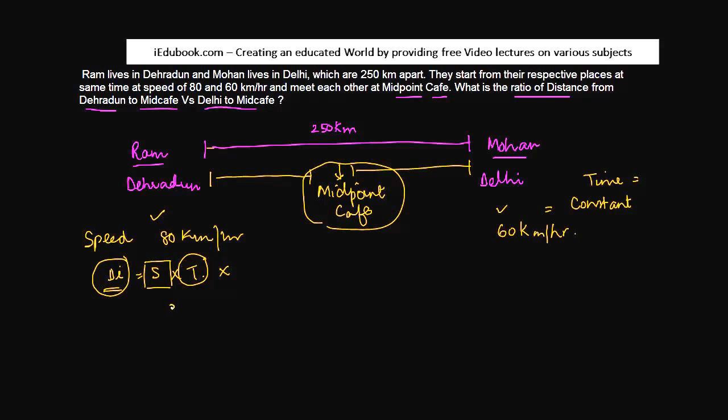What's the ratio of their speed? The ratio of their speed is 80 is to 60, or 4 is to 3. And this is the answer. More simple than anything else, as long as you are aware of this logic.